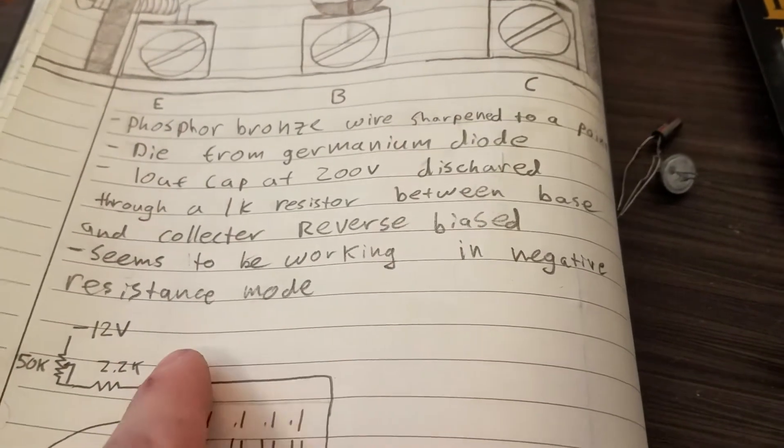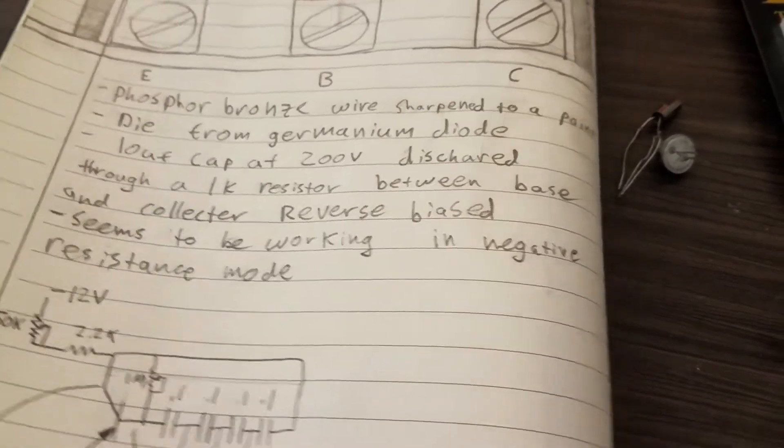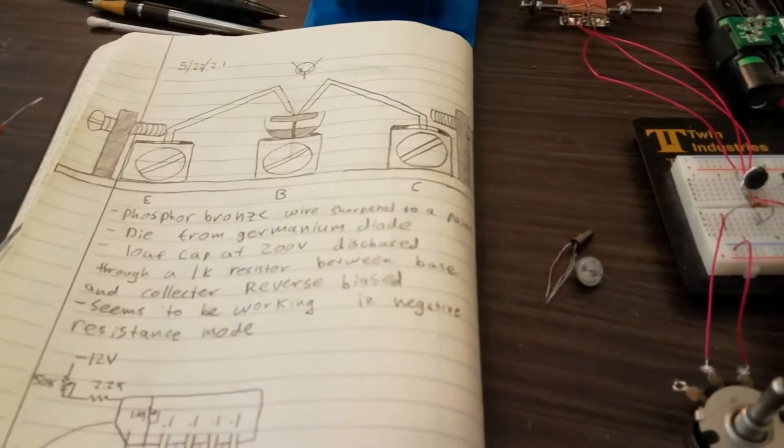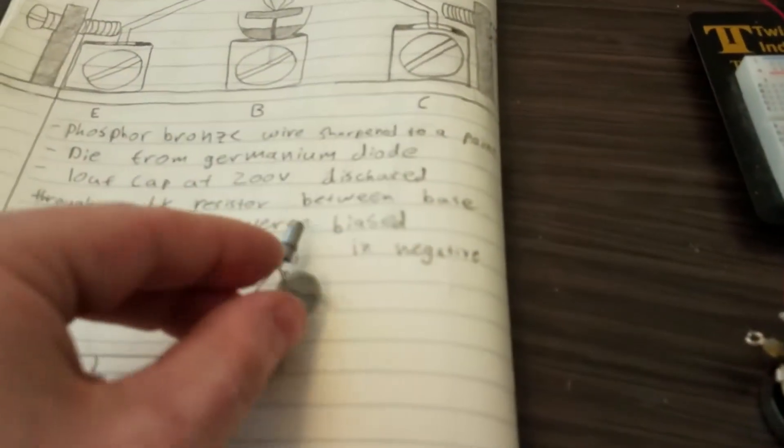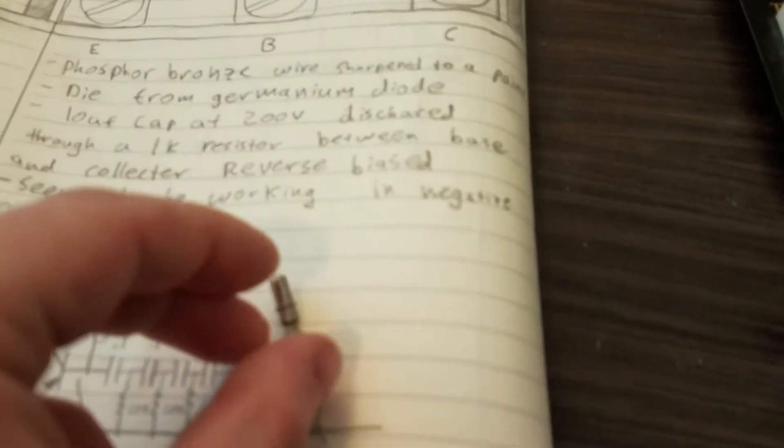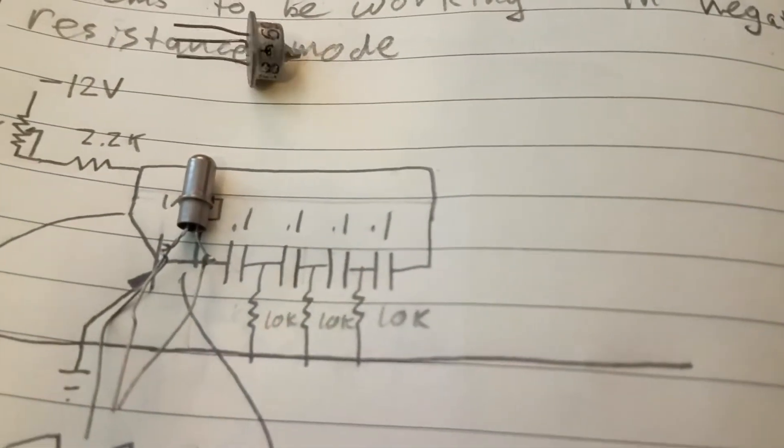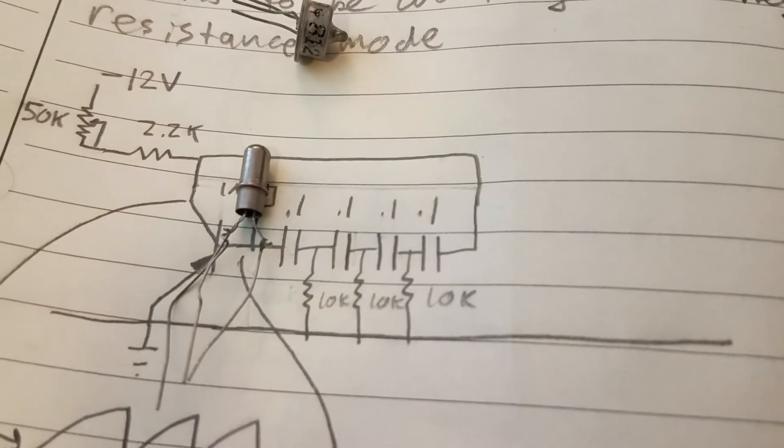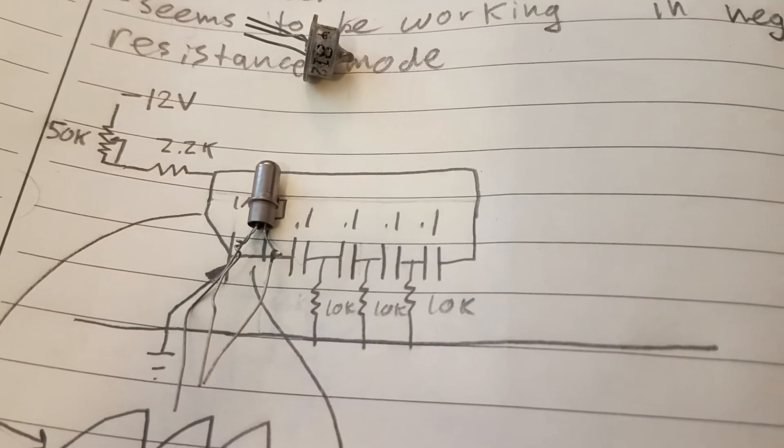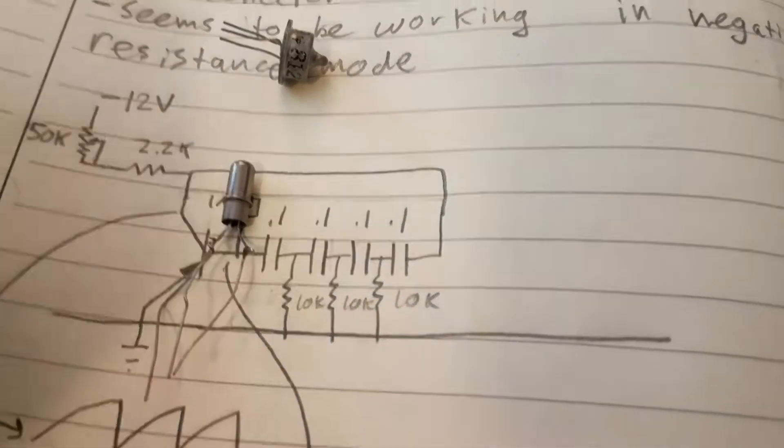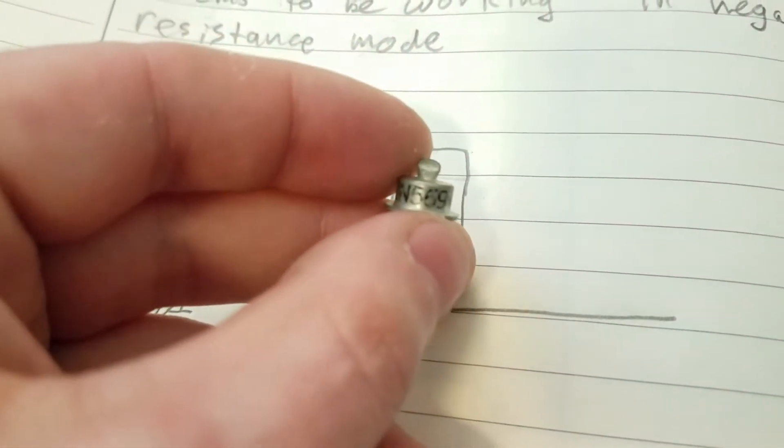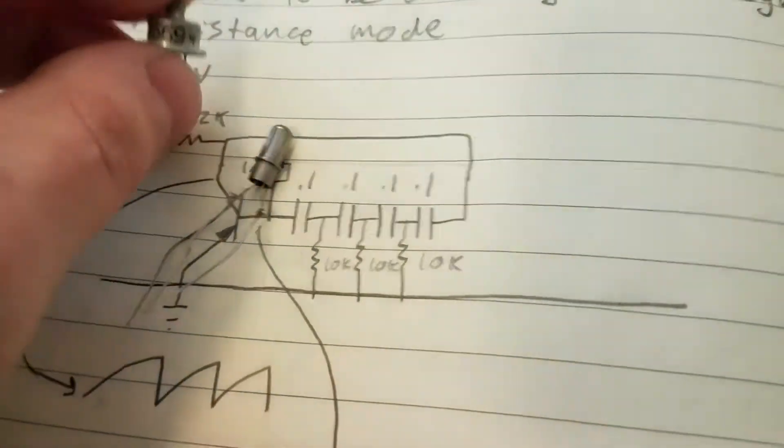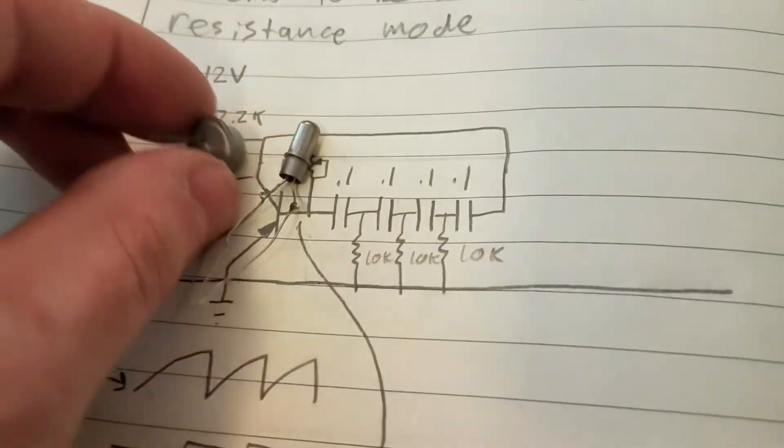And it seems to be working in a negative resistance mode as I said. So just to give a comparison to what we're seeing I have some very old transistors here. So that right there is a Philco 2N240 germanium transistor from about 1959. And then this is a 2N569. I don't know what year this is from but these are both PNP germanium transistors.